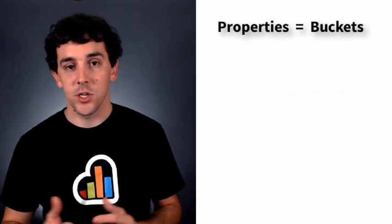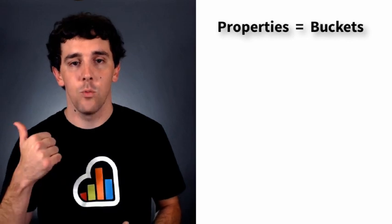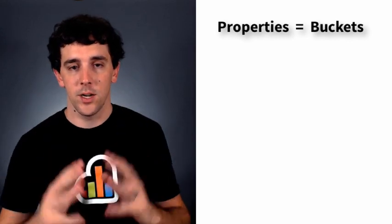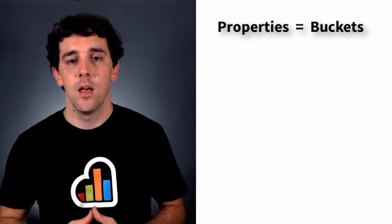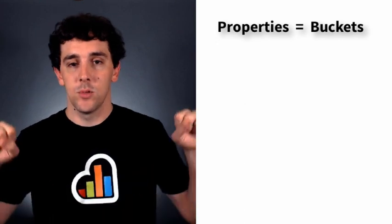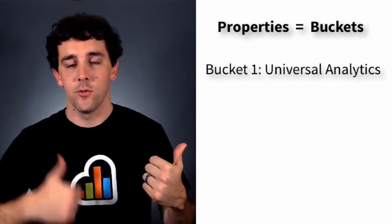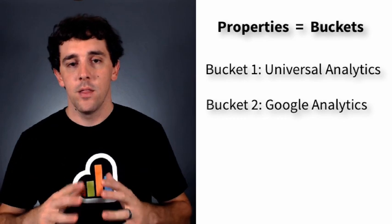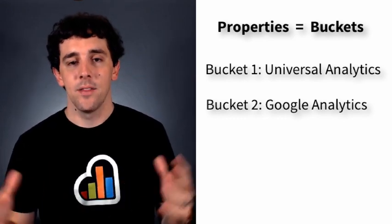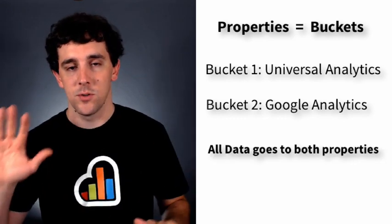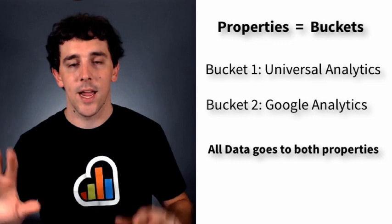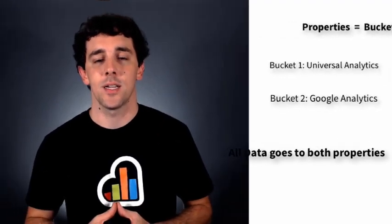Option number two: run them simultaneously. Think of your Google properties as buckets. Traditionally, all of your data goes into one bucket — your traditional Google Analytics code bucket. Under this scenario, you would set up two buckets: a Universal Analytics code and your regular Google Analytics code. Then anytime somebody comes to your site, the data goes into both spots. It goes into your regular account and your Universal Analytics account.